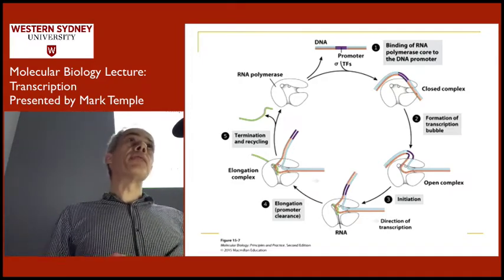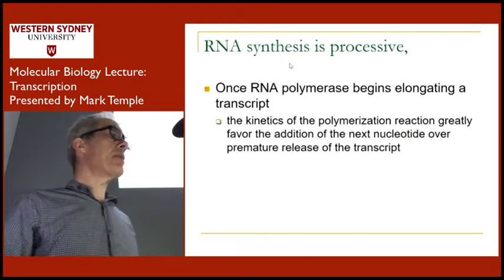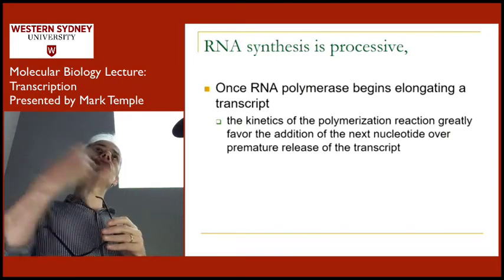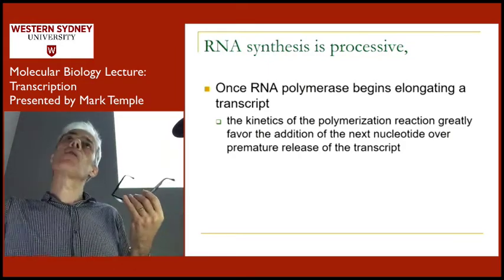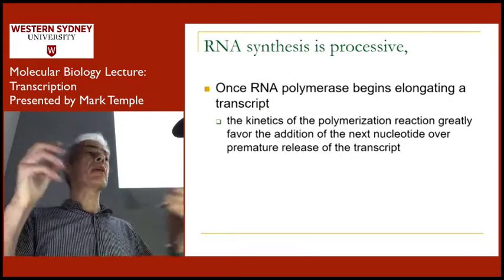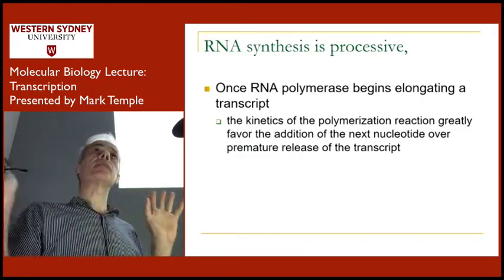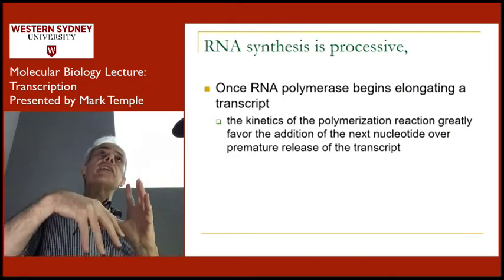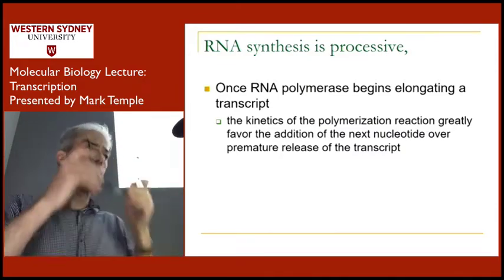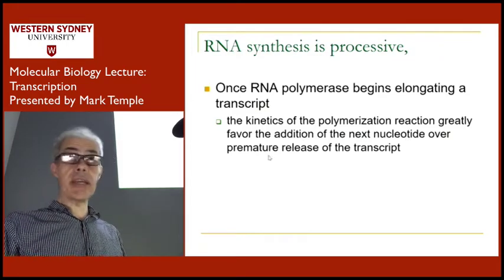RNA synthesis, once it clears the promoter and starts reading the exons and introns, is processive — the polymerase extends all the way to the end of the gene without falling off and reattaching. This is because the DNA is intertwined around the molecule more tightly. The kinetics of polymerization greatly favor addition of the next nucleotide over release of the transcript. Transcription forms part of gene expression: going from the information content in DNA to the expressed form — such as a protein.